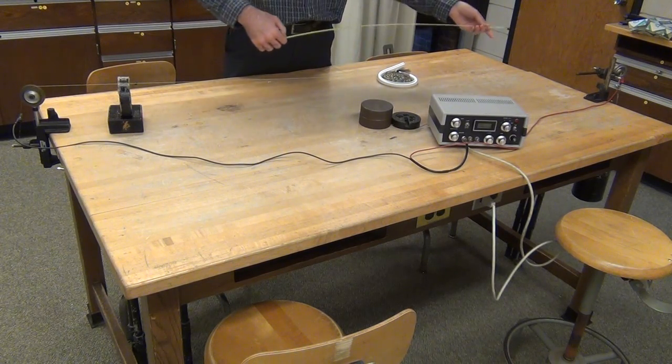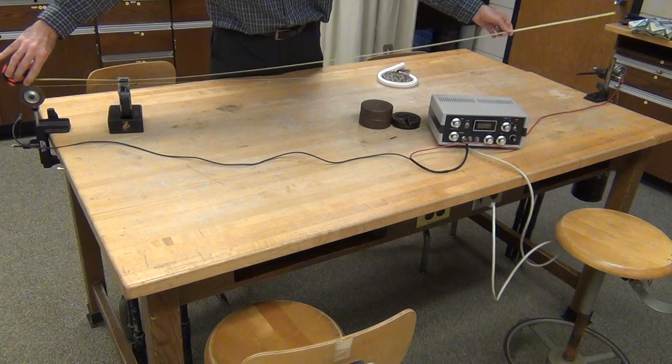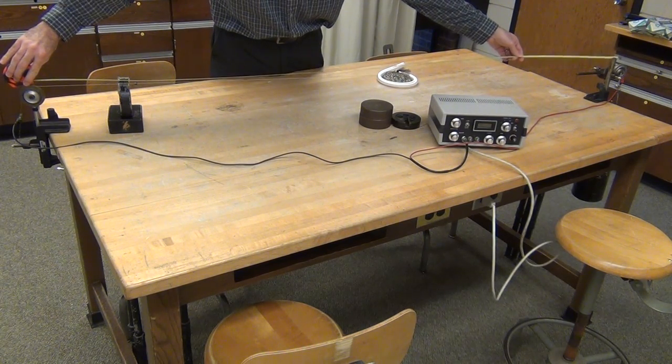Use a tape measure. Measure the length of the wire from where it just touches one pulley to where it just touches the other pulley.